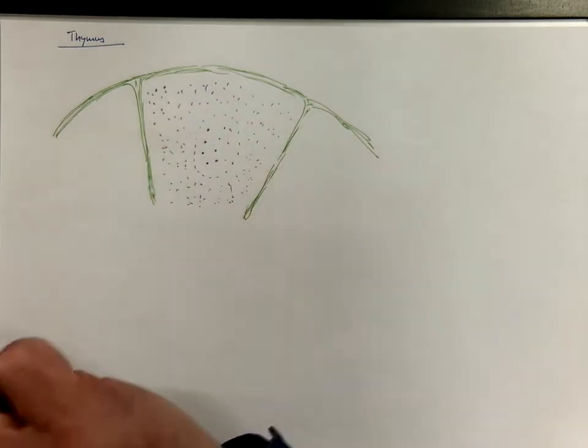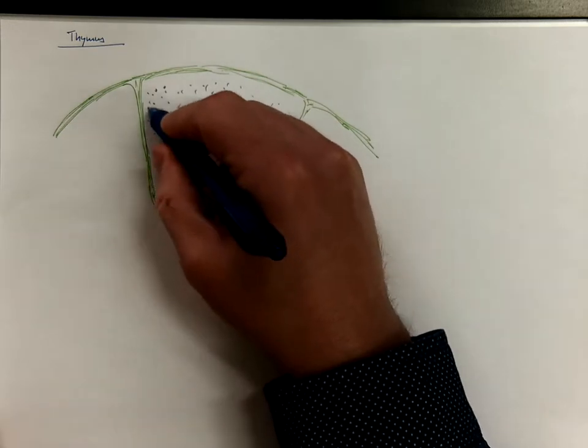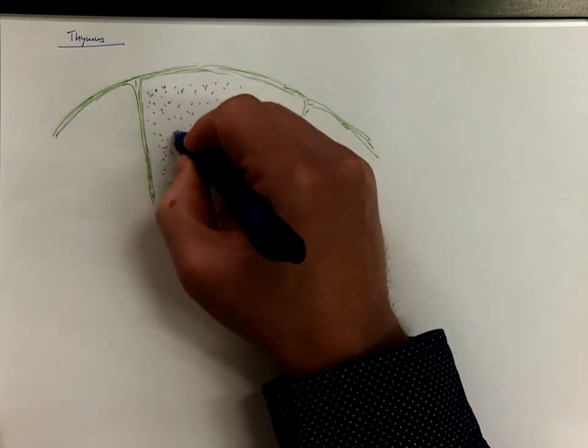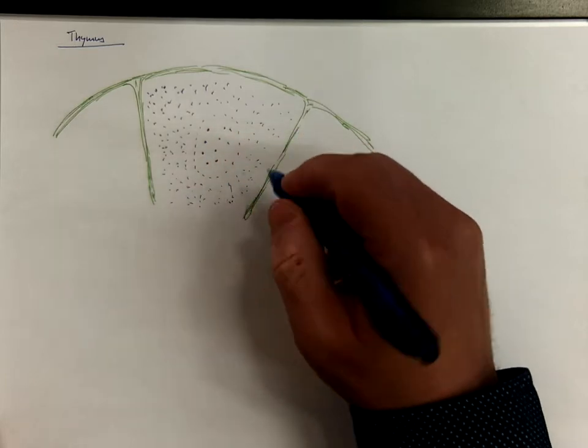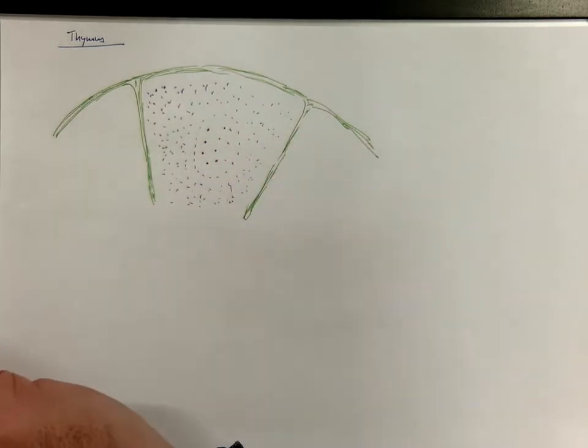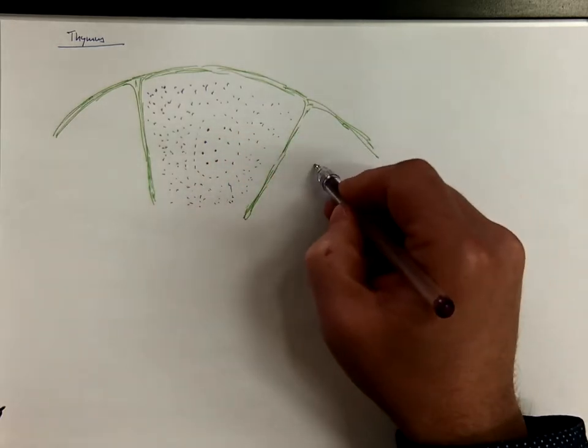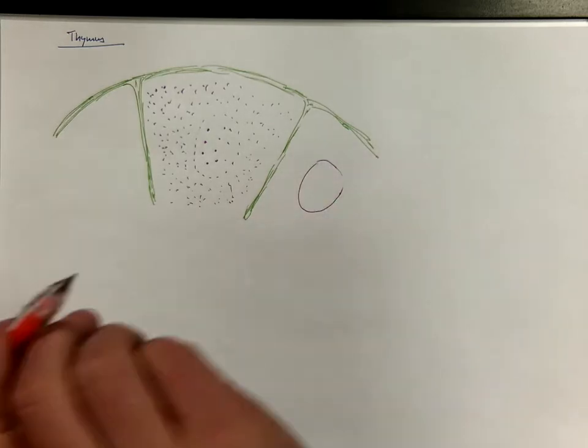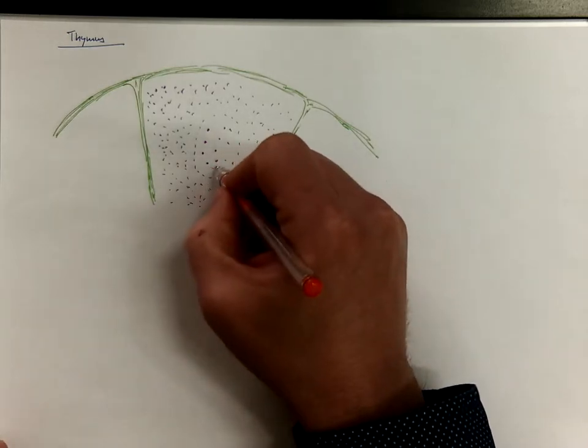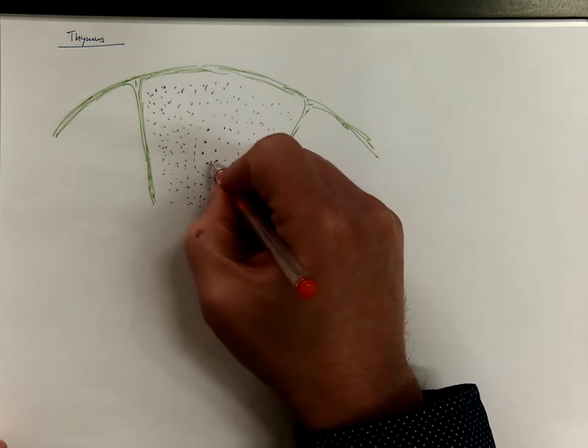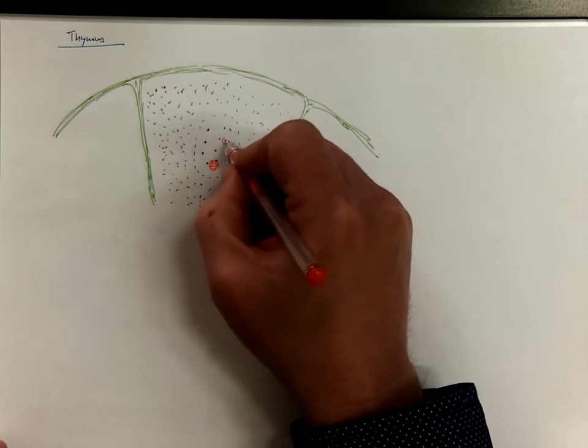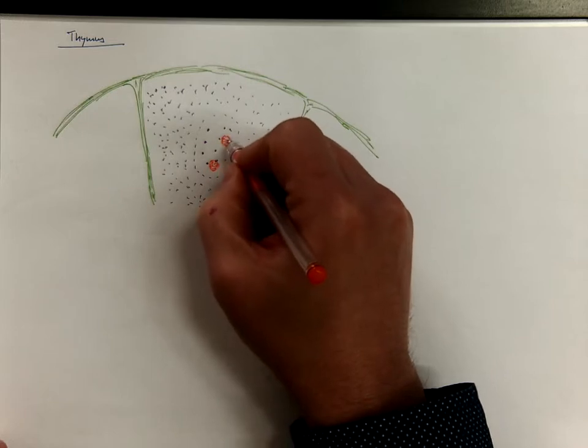We've got this darker cortex and more pale medulla. Moreover, the medulla contains eosinophilic concentric structures called Hassel's bodies, which are collapsed epithelial cells.